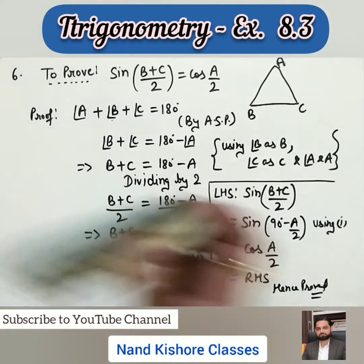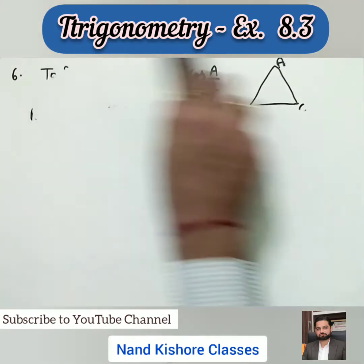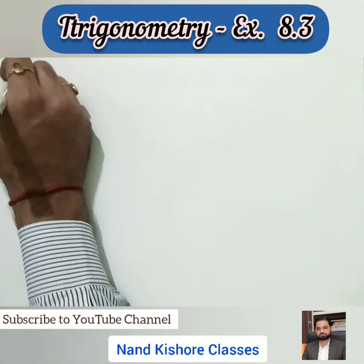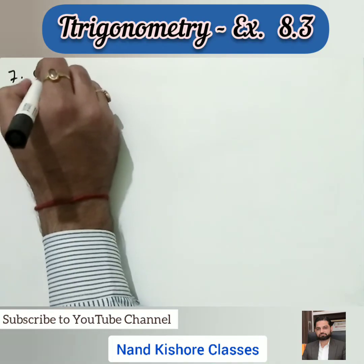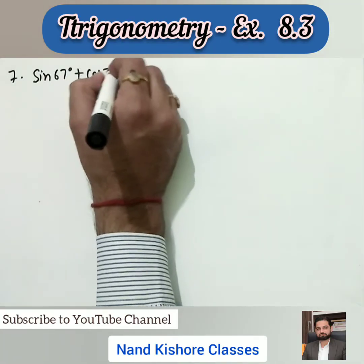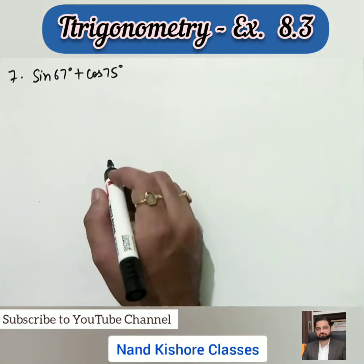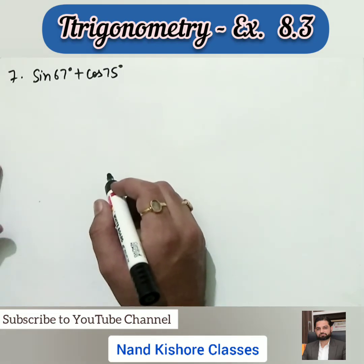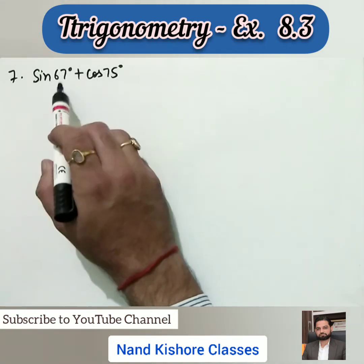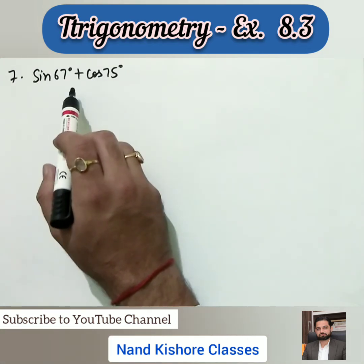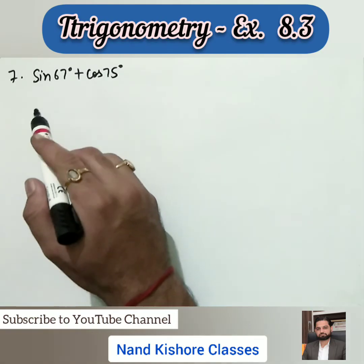Question number seven is also very easy. Express sin(67°) + cos(75°) in terms of trigonometric ratios of angles between 0° and 45°. We want to change these angles so they fall between 0° and 45° — we need to reduce these angles to less than 45 degrees.